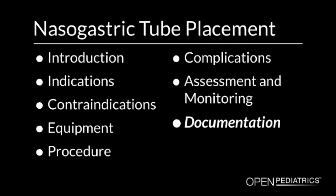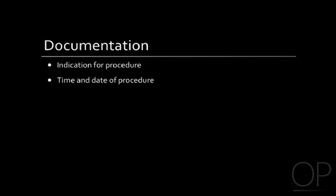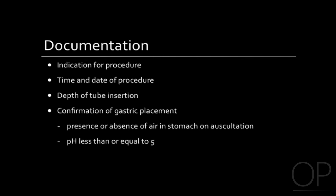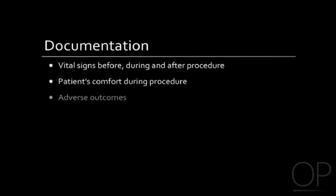Documentation. Following nasogastric tube placement, you should document the following information in the patient's medical record: the indication for the procedure; the time and date of the procedure; the depth of tube insertion; confirmation of gastric placement, which includes the presence or absence of air in the stomach on auscultation, a pH of 5 or less indicating the presence of gastric contents, and the presence of the tube in the stomach on abdominal x-ray; the vital signs before, during, and after the procedure; the patient's comfort with the procedure; and any adverse outcomes.